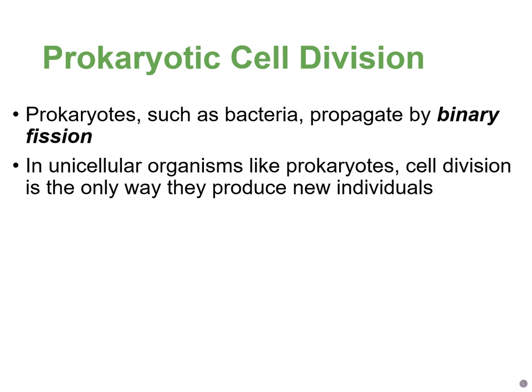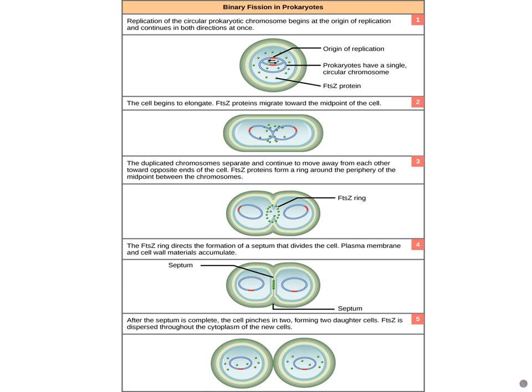Most of this chapter has focused on cell division in eukaryotes, since mitosis involves nuclear division and only eukaryotes have nuclei. Prokaryotes like bacteria lack a nucleus and divide through a process called binary fission. Prokaryotes are unicellular, and in some unicellular eukaryotes, cell division is the only way to produce new individuals. The first step of binary fission is chromosome replication — just as eukaryotes replicate DNA in S phase, prokaryotes copy their single circular chromosome before dividing.